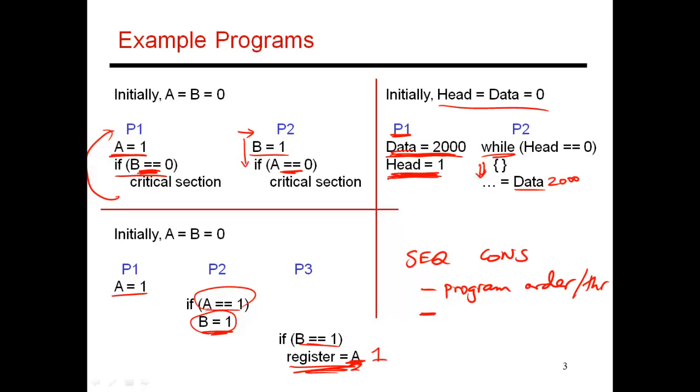The second assumption that a programmer usually makes is that each instruction executes atomically. That is, before I do head equals 1, I'm going to finish data equals 2000 in its entirety. I'm not going to start doing head equals 1 while data equals 2000 is still being processed in the background. That becomes really hard for the programmer to reason about what all is going on in the system. So we always assume that at any given point of time, only one instruction is executing. It's going to finish completely, then I'll move on to the next. Otherwise, we are putting too much of a burden on the programmer to reason about too many flying balls in the air. So I'm making the assumption that every instruction executes atomically.